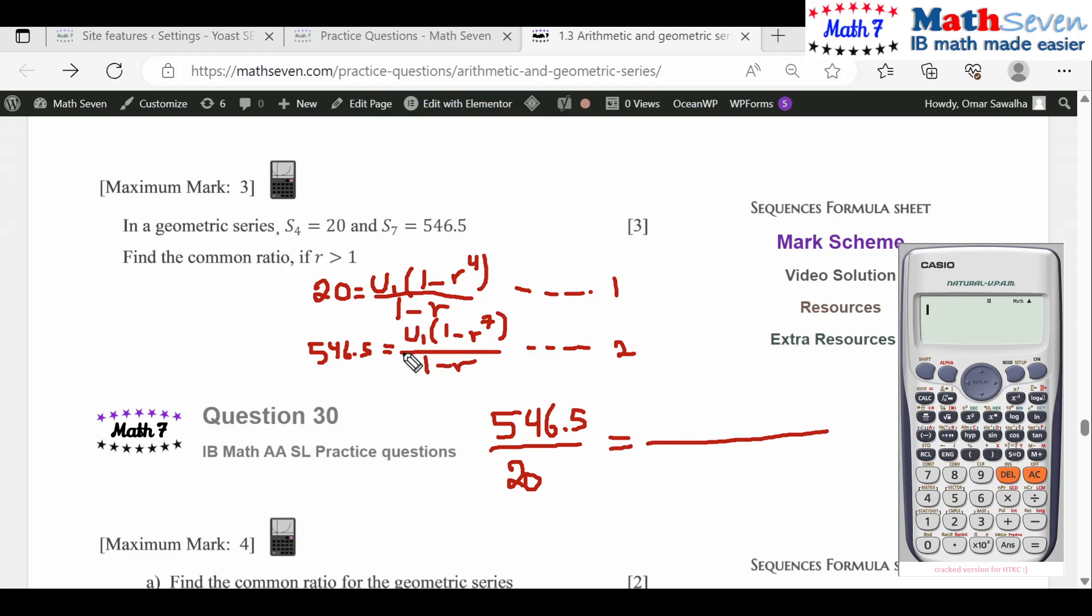The U1 terms cancel out and the (1-r) terms cancel out, so you will have (1 - r^7)/(1 - r^4). This is an equation with one variable so it can be solved. Let's simplify this.